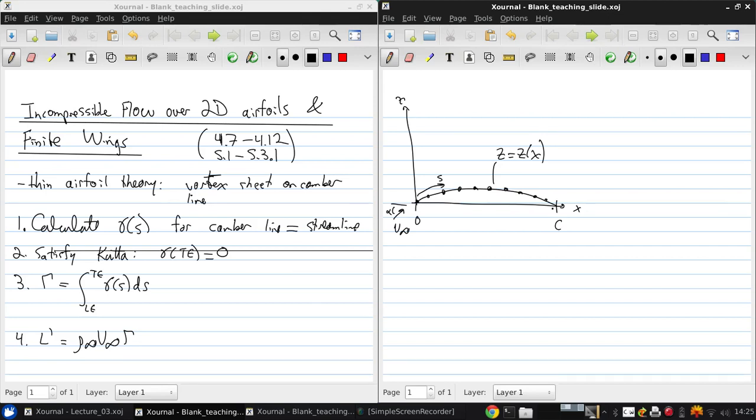So, this is the chord line, and this is the camber line. Now, for a thin airfoil, the camber line is not very far from the chord line. So, if we zoom out a little bit, we can imagine that we might be able to neglect the effects of the camber line and instead distribute the vortices along the chord line. Now, we're still making the camber line a streamline of the flow.